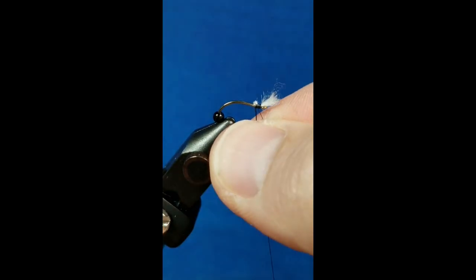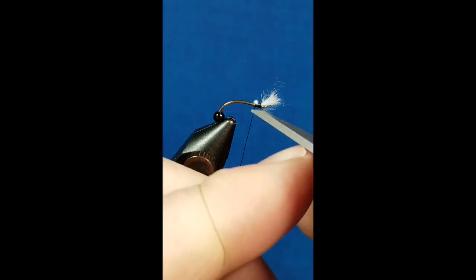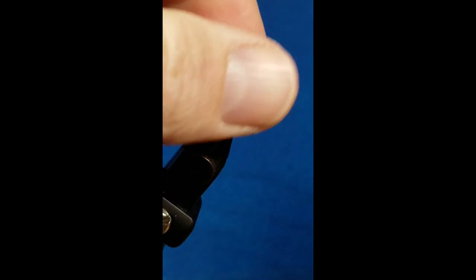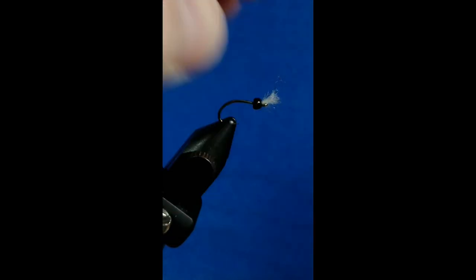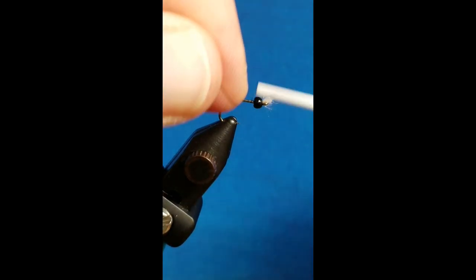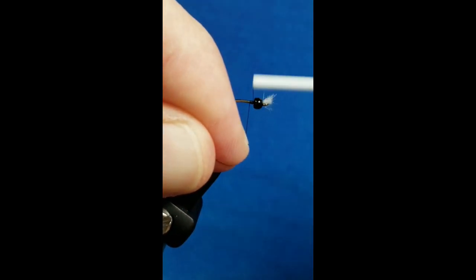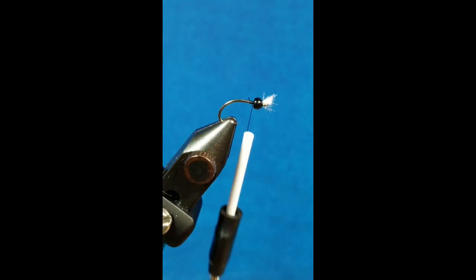Then we'll slide the bead up over that material. Once I've got the bead up there in place where I want it, we'll come in and attach that thread right behind the bead.